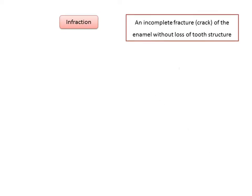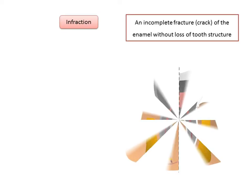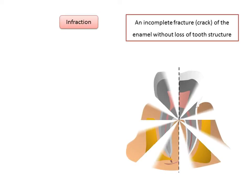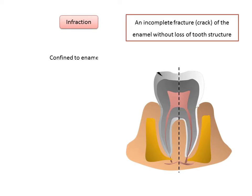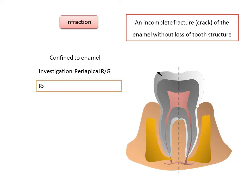Management of infraction: it is confined to the enamel and may or may not be visible on a periapical radiograph. In cases of staining or for aesthetic reasons, etching and sealing with composite resin can be performed.